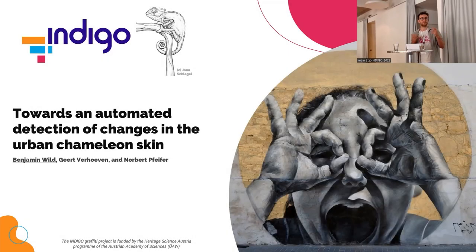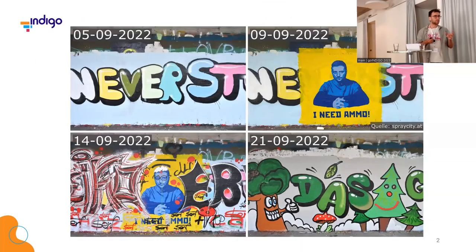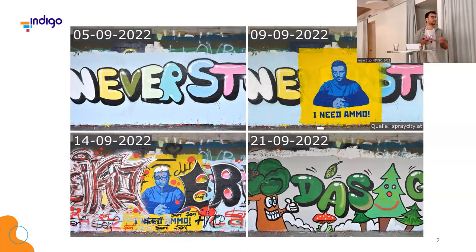I'll be talking about how we in Project Indigo automated change detection. The title of the presentation is 'Towards an Automated Detection of Changes in the Urban Chameleon Skin.' The Danube Canal is the urban chameleon skin, and graffiti in general. In Project Indigo, we want to document it all — we really want to capture as much new graffiti as possible, and that has so far proven to be extremely challenging.